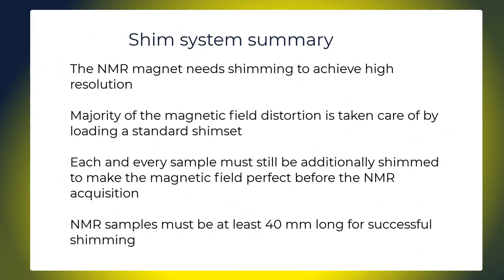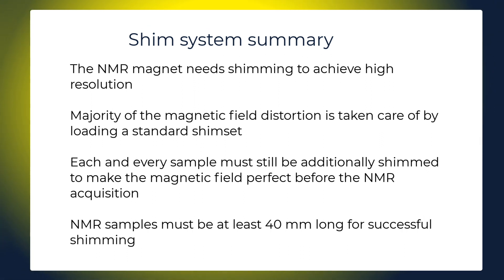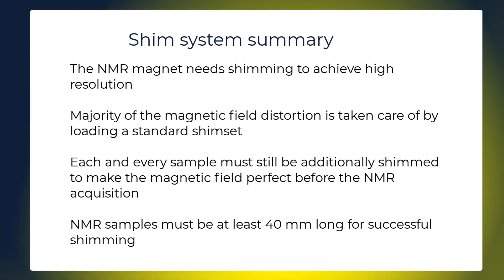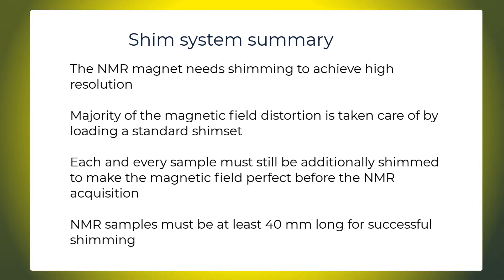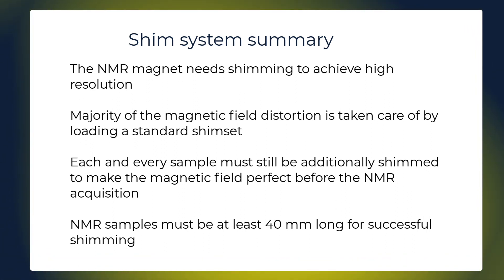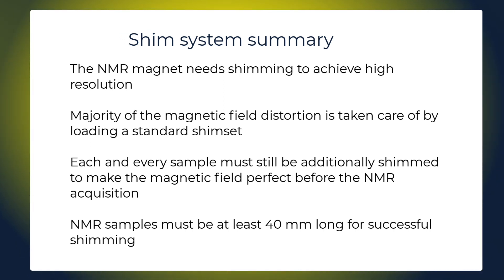In summary, the NMR magnet needs shimming to achieve high resolution. Majority of the magnetic field distortion is taken care of by loading a standard shim set. Each and every sample must still be additionally shimmed to make the magnetic field perfect before the NMR acquisition. NMR samples must be at least 40 mm long for successful shimming.